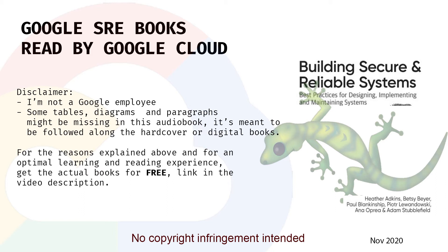Accommodating security and reliability requirements in an existing system often requires significant design changes, major refactorings, or even partial rewrites, and can become very expensive and time-consuming. Furthermore, such changes might have to be made under time pressure in response to a security or reliability incident, but making significant design changes to a deployed system in a hurry comes with a significant risk of introducing additional flaws. It's therefore important to consider security and reliability requirements and corresponding design trade-offs from the early planning phases of a software project. These discussions should involve security and SRE teams, if your organization has them.